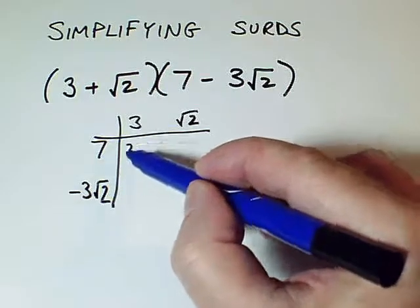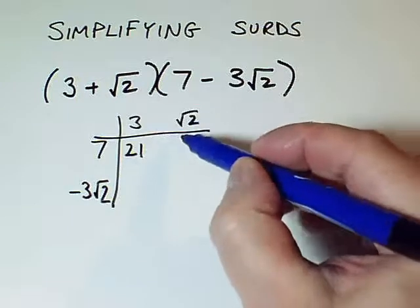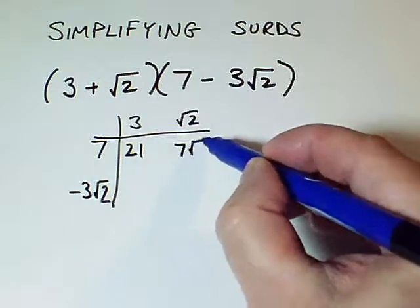7 times 3 is 21. 7 times root 2, all I can do with that is write it as 7 times root 2.